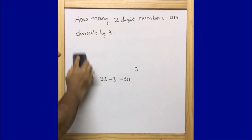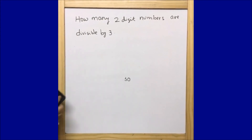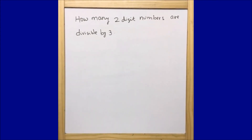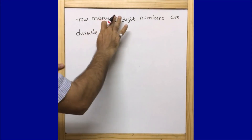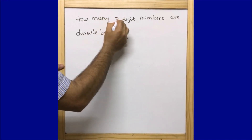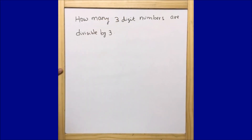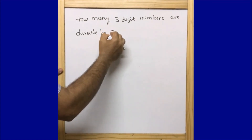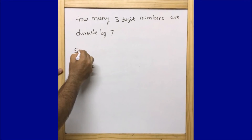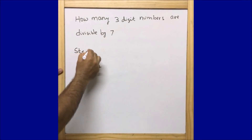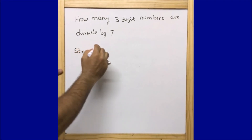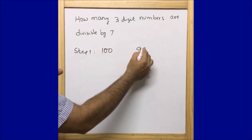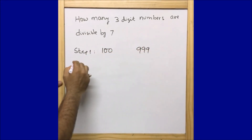Now let us look at one more example. How many three-digit numbers are divisible by seven? Let us quickly do it. Step one: the lowest three-digit number is 100 and the highest three-digit number is 999.